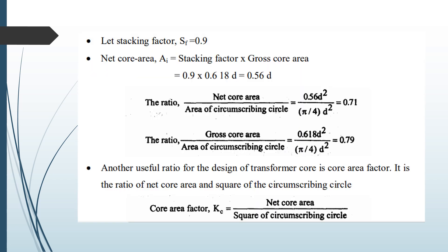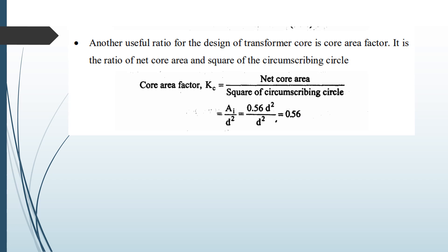The reason we use different types of step cores, such as the two-step core, is to maximize the area utilized within the circumscribing circle and to reduce the space wasted between the coils and core. The core area factor for a two-step core can be calculated simply by dividing the net core area by the square of the diameter of the circumscribing circle.